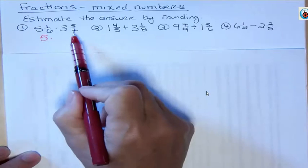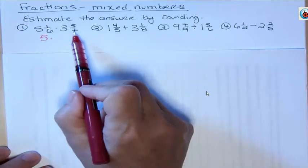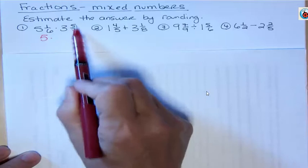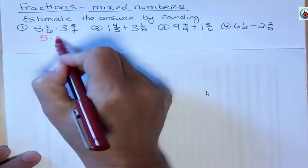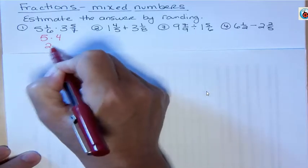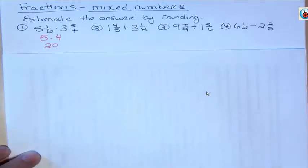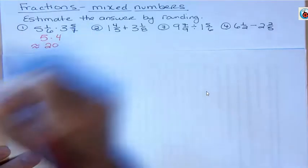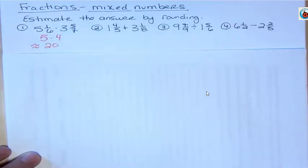What about five sevenths? Well, what's half of seven? It's three and a half. We have more than three and a half. So we're more than half. We're going to take the three up to four. So the answer, the estimated answer is 20. Sometimes when people estimate things, approximate things, you'll see the wavy line is approximately 20. That's a nice estimate.